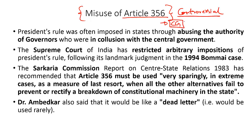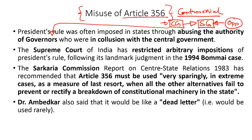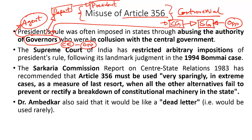Various governments at the centre have misused this provision to topple state governments formed by opposition parties. Central governments have misused the office of the Governor, who is considered an agent of the centre. Whenever there is a constitutional crisis in states ruled by opposition parties, the central government would direct the Governor to send a report to the President stating that the constitutional machinery has failed, justifying the imposition of President's rule under Article 356.